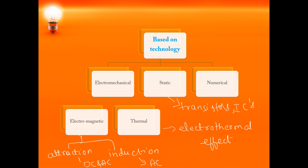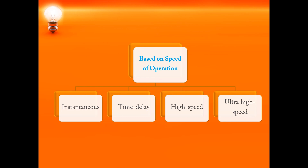The electromechanical relay is the first generation, the static relay is the second generation, and the numerical relay is the third generation. Next is classification based on the speed of operation — how fast the relays are operating. The relays have to send a signal to the circuit breaker to trip as soon as possible without any delay. If the fault persists for a long time and the relay is not issuing the signal, then there will be damage. Based on speed, relays are classified as instantaneous, time delay, high speed, and ultra high speed.